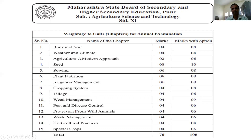Lesson 9 Tillage: 4 marks with option 6. Lesson 10 Weed Management: 4 marks with option 9. Lesson 11 Pest and Disease Control: 4 marks with option 6. Lesson 12 Protection from Wild Animals: 4 marks with option 6. Lesson 13 Waste Management: 4 marks with option 6. Lesson 14 Horticultural Practices: 4 marks with option 4. Lesson 15 Special Crops: 4 marks with option 6. Total: 105 marks.